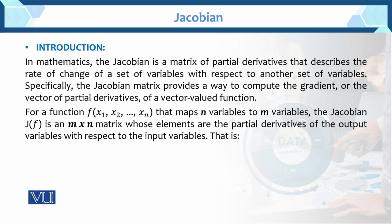In mathematics, the Jacobian is a matrix of partial derivatives that describe the rate of change of a set of variables with respect to another set of variables. Yarni, aapke paas Jacobian kya hai? Partial derivative haam ismei le rahe hai. Or partial derivative basically kya describe karta hai? Rate of change describe karta hai kiski set of variables ki with respect to another set of variables.